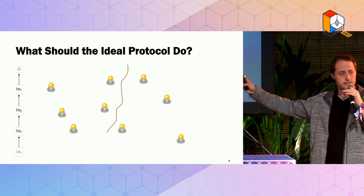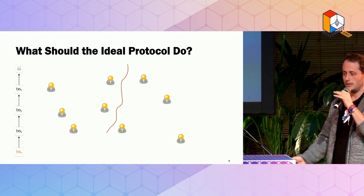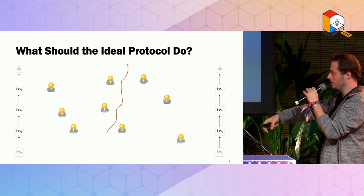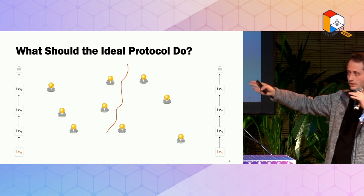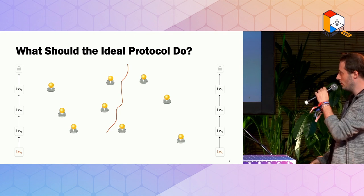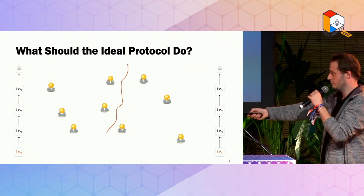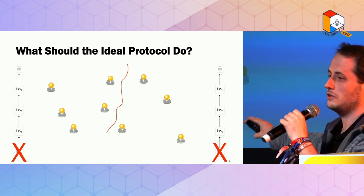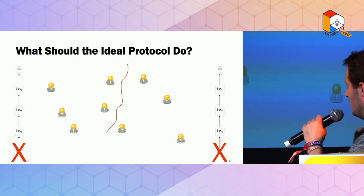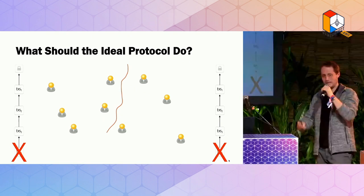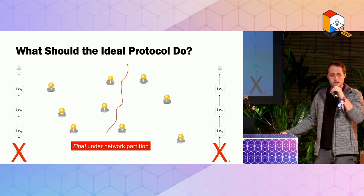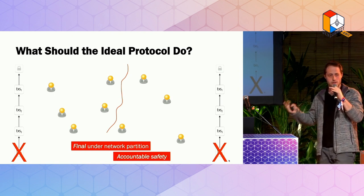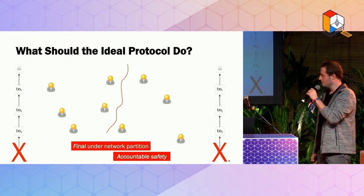On the other hand, if the situation is actually a network partition, what should the protocol do? If the protocol keeps going and producing blocks, there is a risk that the guys on the other side of this divide will also keep going, because to them it also looks like the western half of the world has disappeared. But then we end up with blockchains that are inconsistent — we have different blocks at the end. That would be a safety violation. So in the case of a network partition, let's stop here and wait for the situation to resolve, then continue when we're all back together. This property — for lack of a better term — we want to call finality. It has some relationship to another property that often gets mixed up in discussions: accountable safety.